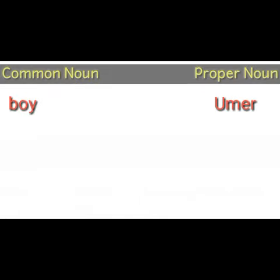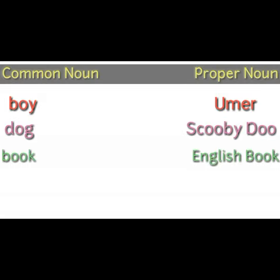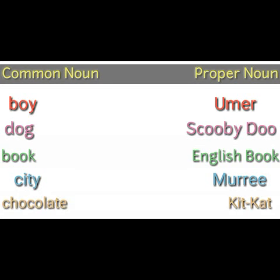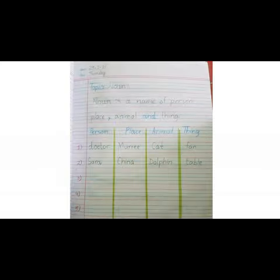Boy is a common name; if we give the name Umar to a boy, then Umar is a proper name. Dog is common; Scooby-Doo is the name of a dog, so it's a proper noun. Book is common; English book is a proper name. City is common; Murray is a proper name. Chocolate is common; KitKat chocolate is a proper name. Hope you understood all of it!